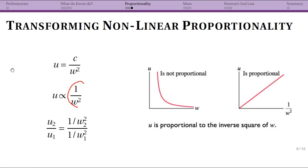So what we could do is if we say that 1 over w squared equals y, y is now a function of w, it's not a constant, but you could then say that u is proportional to y.